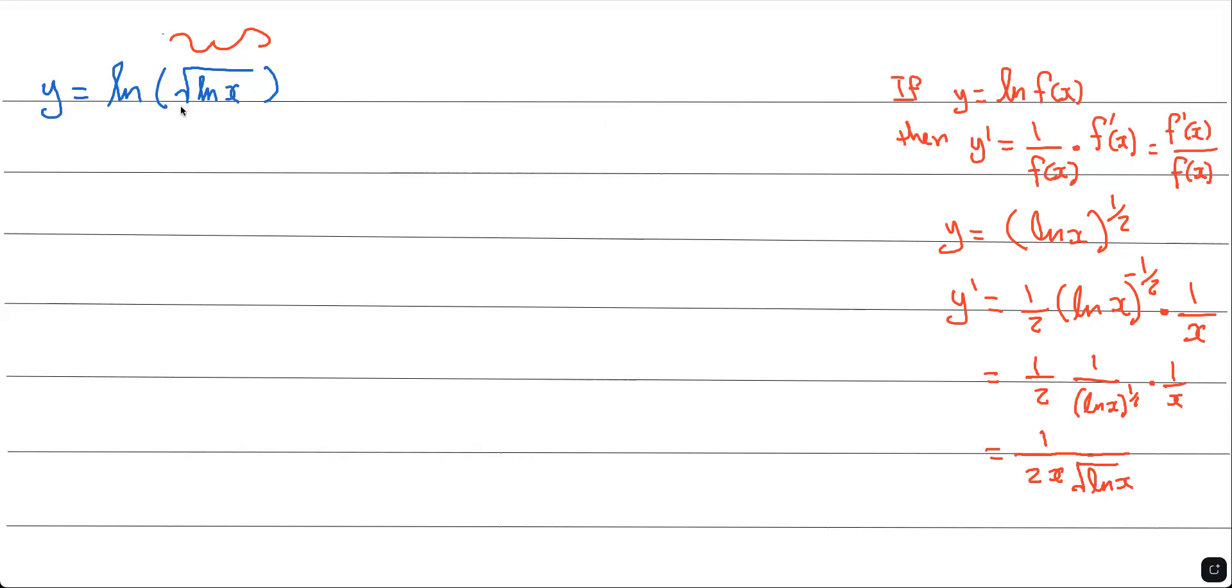So what we did, we found the derivative of f(x). Now, let's take the derivative of the original equation. y prime equals 1 over all of this, which is 1 over the square root of ln x, times the derivative of this.